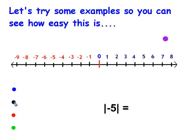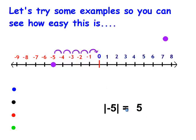Now I'm going to try to find the absolute value of negative 5. I'm going to take a pointer and put it on the number line. You may have to draw your own number line. Now I'm going to find out the distance negative 5 is from zero. So I'm just going to count: 1, 2, 3, 4, and 5. So the absolute value of negative 5 is 5.